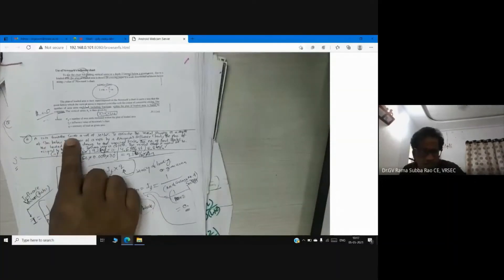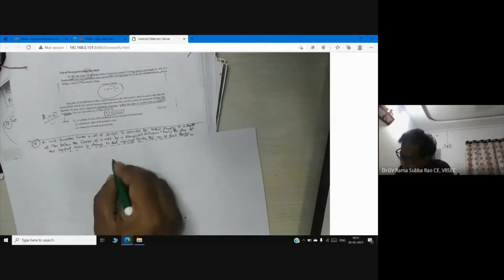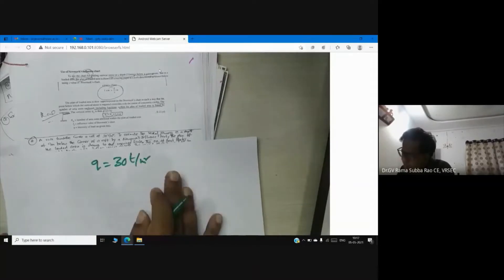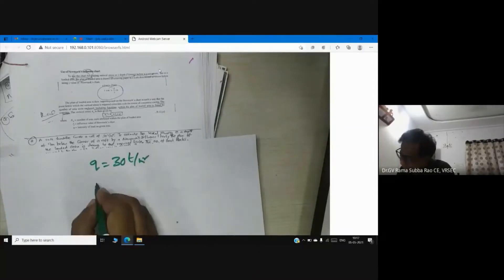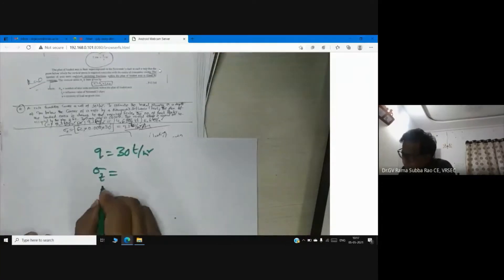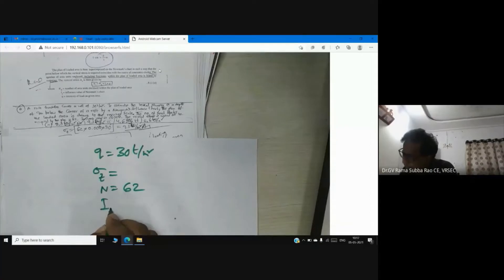On a raft foundation which carries a UDL—I will write here which carries a UDL, q = 30 kN per square meter. Now you see we need to calculate vertical stress. The number of loaded blocks is 62, influence number is 0.005.